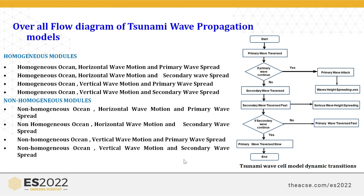These combinations are considered as the homogeneous model and non-homogeneous model. In the homogeneous model: horizontal wave motion with primary wave spread, horizontal wave motion with secondary wave spread, vertical wave motion with primary wave spread, and vertical wave motion with secondary wave spread. The same conditions apply for the non-homogeneous model.